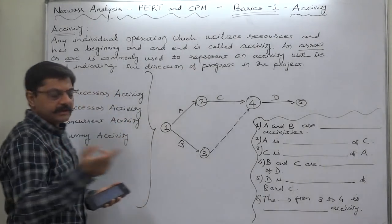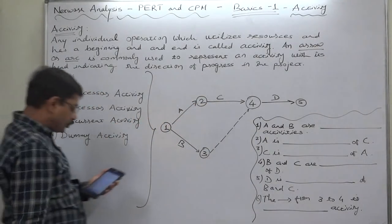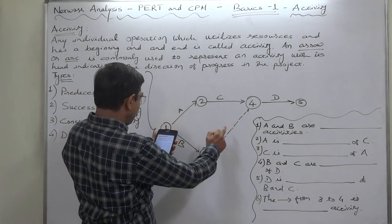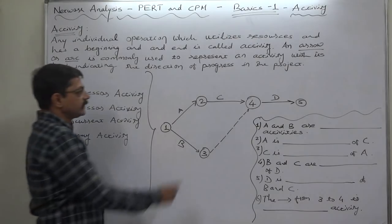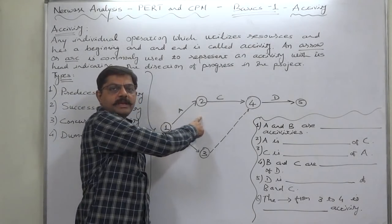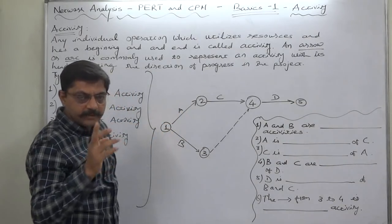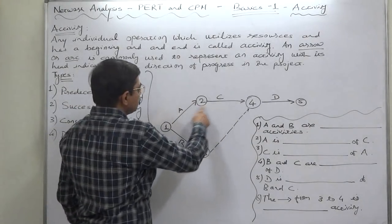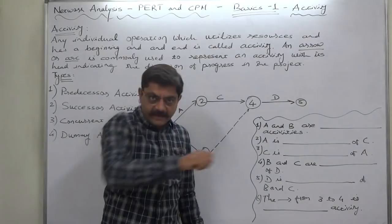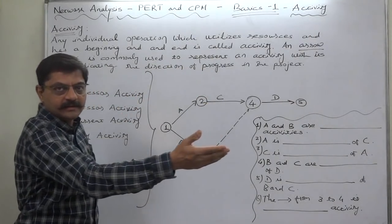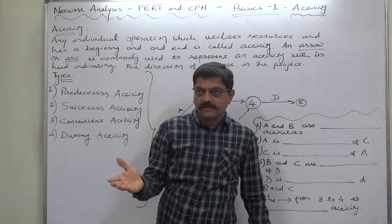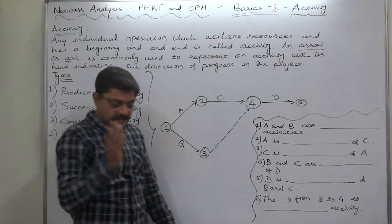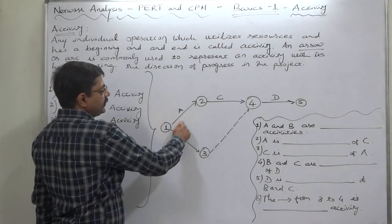The second type is successor activity. Predecessor and successor are a mutual relationship. Activities that cannot be started until one or more other activities are completed, but immediately succeed them, are called successor activities. After completing A, C can immediately be started, so C becomes the successor of A — C takes charge from A. Like in an office where one executive is transferred and another takes charge — that is the predecessor-successor relationship.